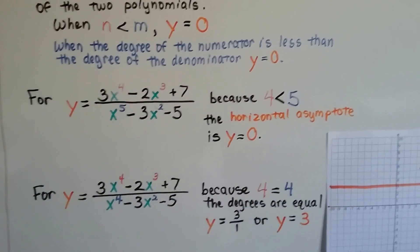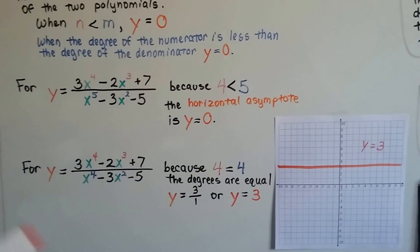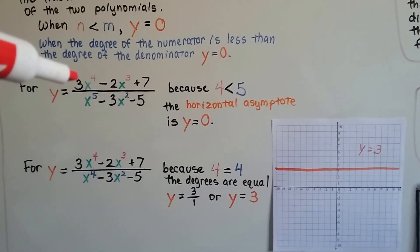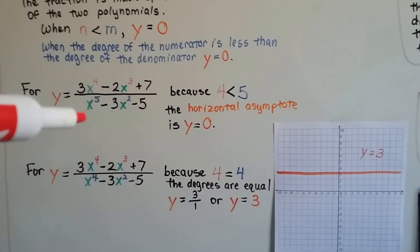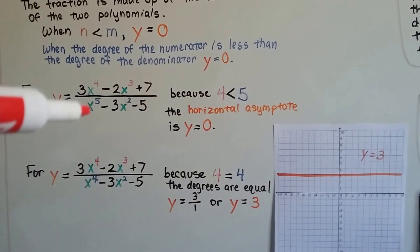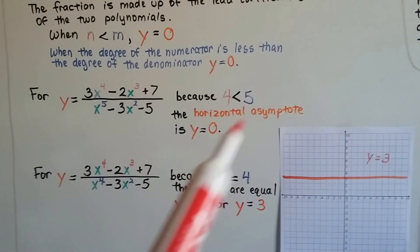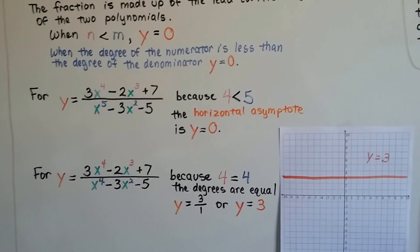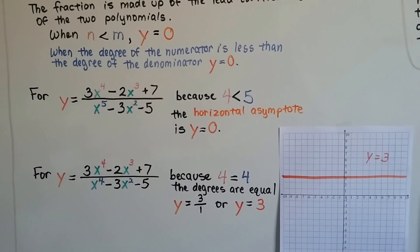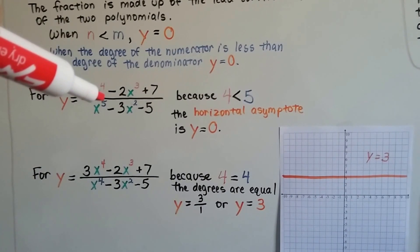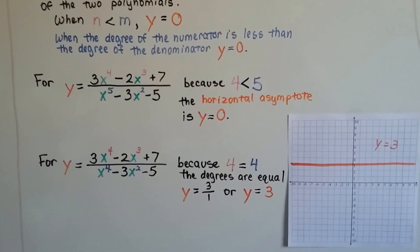This should clear up any confusion. Here we've got a numerator that's got a 3x to the 4th power, and the leading coefficient of the denominator is x to the 5th power. Because 4 is less than 5, the horizontal asymptote is y equals 0. When this one is less than the denominator one, it's going to be y equals 0.